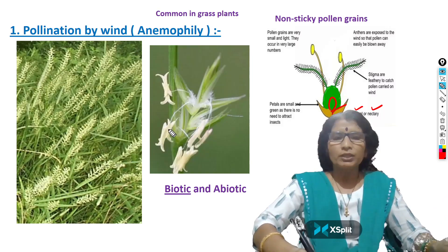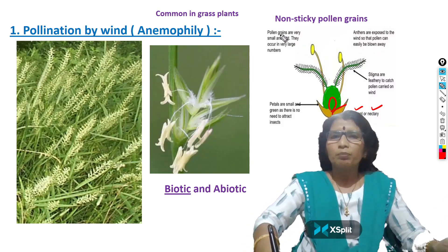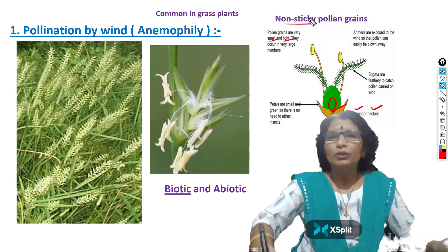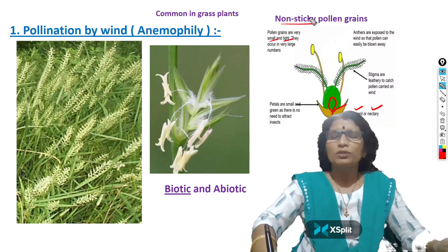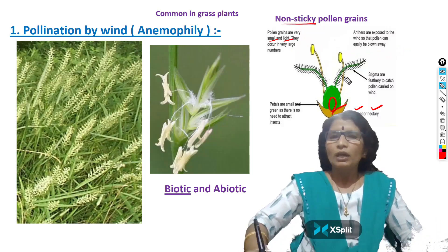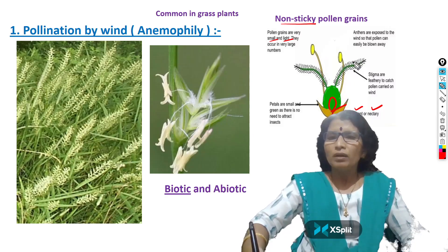Due to this nature, the liberated pollen grains are easily blown away by the wind. The pollen grains are very small in size, light in weight, and non-sticky. Due to this nature also, the pollen grains are blown away by the wind easily. The stigma is a feathery-like structure. Due to this nature, the stigma can easily hold the pollen grains.